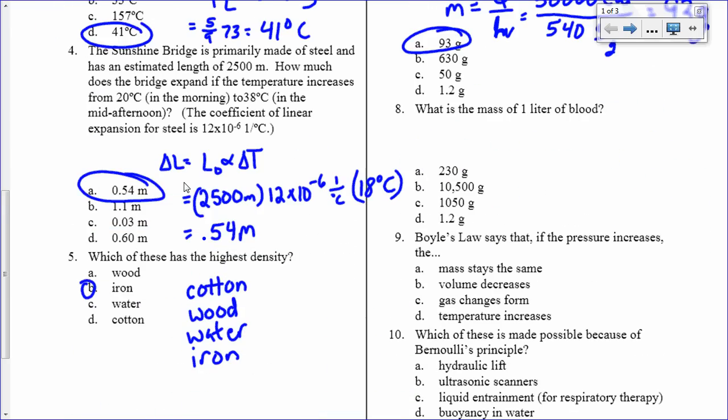What is the mass of one liter of blood? Well, if I look up the density of blood, which is on your equation sheet, under density of substances, it's 1.05 grams per cubic centimeter. And you also need to realize that one milliliter is equal to one cubic centimeter. That's a cc, which is equal to one cc. And so one liter is equal to 1,000 cubic centimeters.